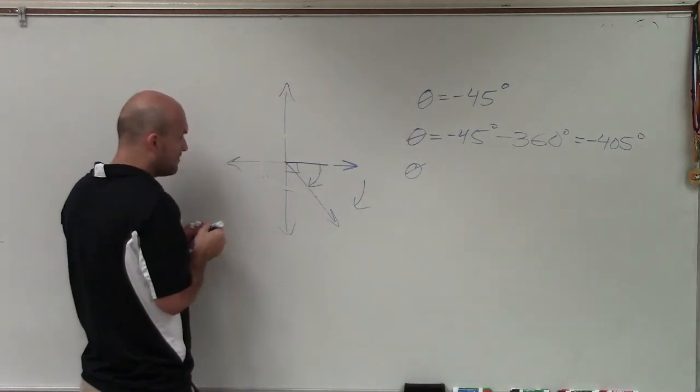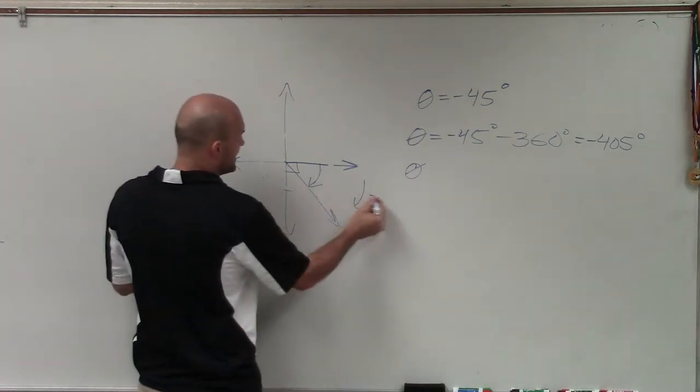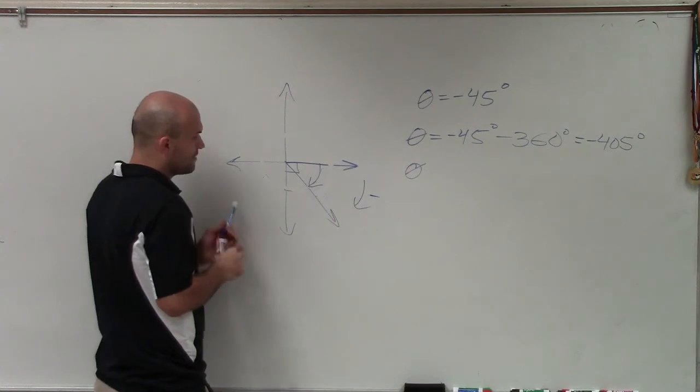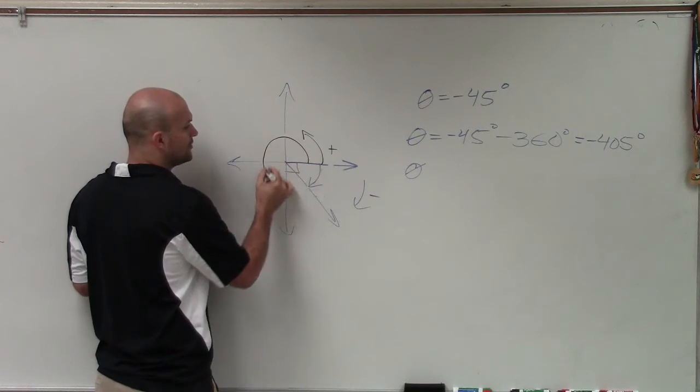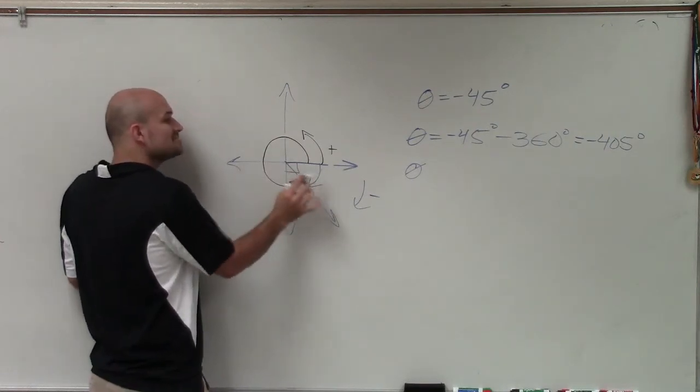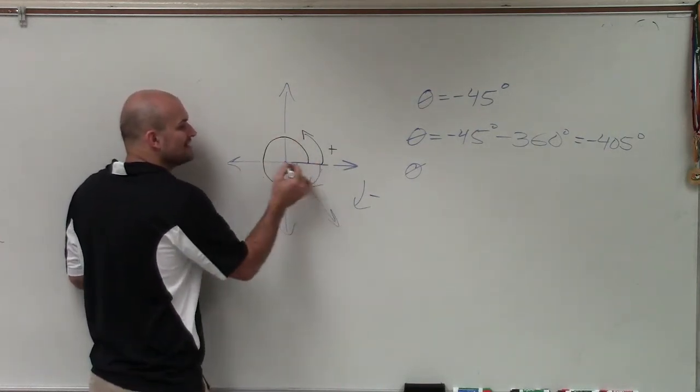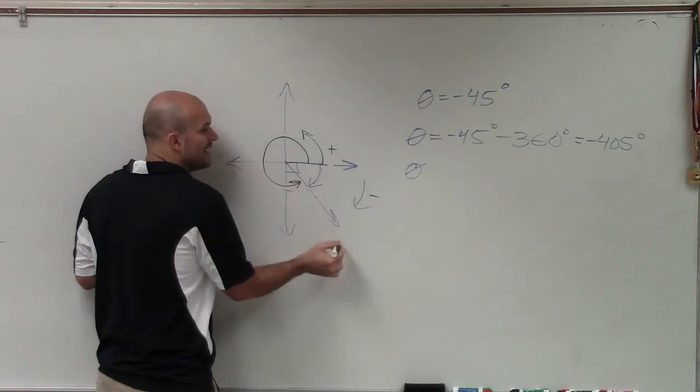So if I want to find an angle in the positive direction, remember, here's negative. So if I was going to rotate my ray in the positive direction, I need to go this way. So I'm going to have to rotate all the way around to here. And that's going to be the smallest angle in the positive direction that's still going to have this initial side and this terminal side.